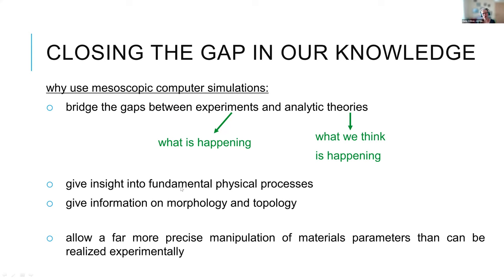Why use mesoscopic computer simulations and not atomistic ones? We can use them at the microstructural level, and they give us insights into fundamental physical processes. We can focus on individual boundaries, individual grains, but also on the whole digital sample. They provide additional information on morphology of particular grains and the topology of the whole microstructure in 3D. Often these simulations allow far more precise manipulation of material parameters than possible in an experiment — for example, manipulating one or two parameters to fit the simulation to experiment and then use it for further predictions.